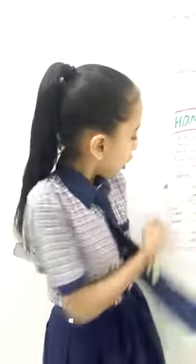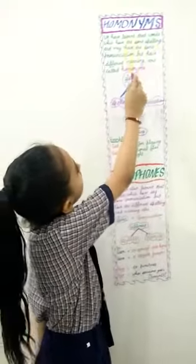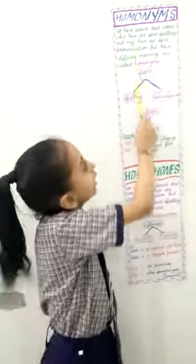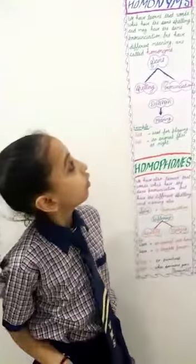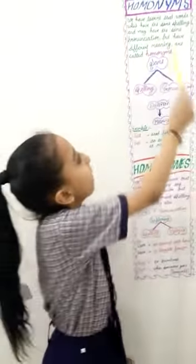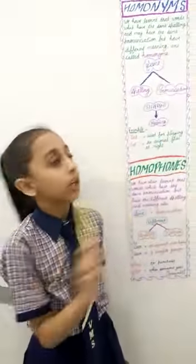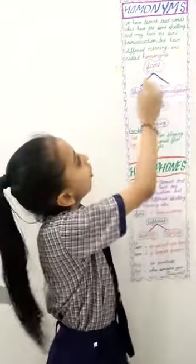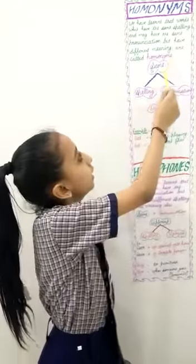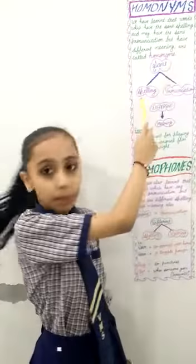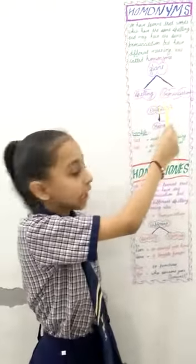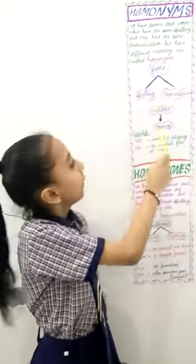Firstly, I am telling you about the harmonics. We have learned the words which have the same spelling and may have the same pronunciation also, but have a different meaning. Such words are called harmonics. Look here — same spelling and pronunciation, and different meaning.